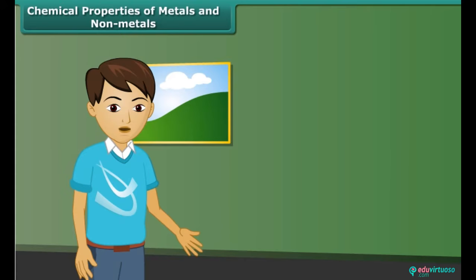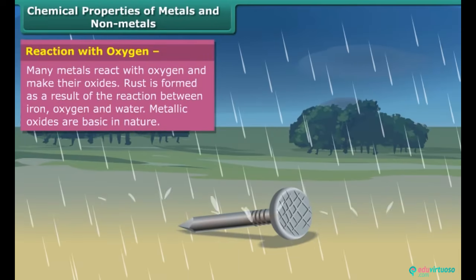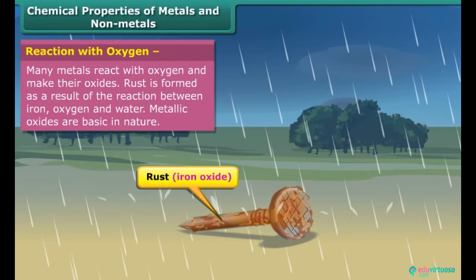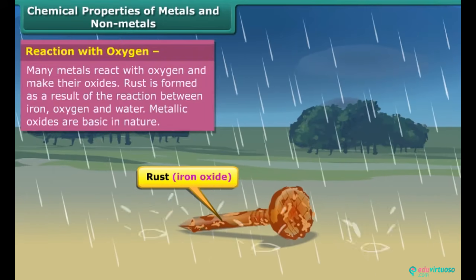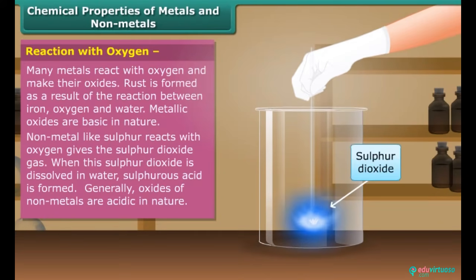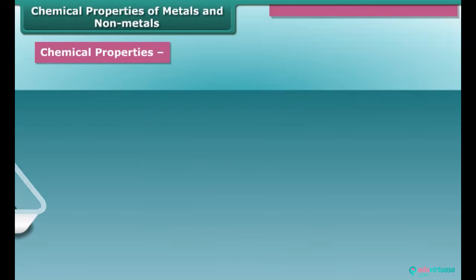After discussing the physical properties of metals and non-metals, let's know about their chemical properties. Metals like iron, copper, and magnesium react with oxygen and form their oxides. These oxides are basic in nature. Now, for non-metals: sulfur reacts with oxygen giving sulfur dioxide gas, and oxides of non-metals are acidic in nature.